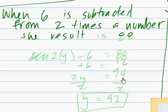So we know that if the result is 88, then all we have to do is put equals 88. 6 subtracted from a number, 2x, or 2y in this case.